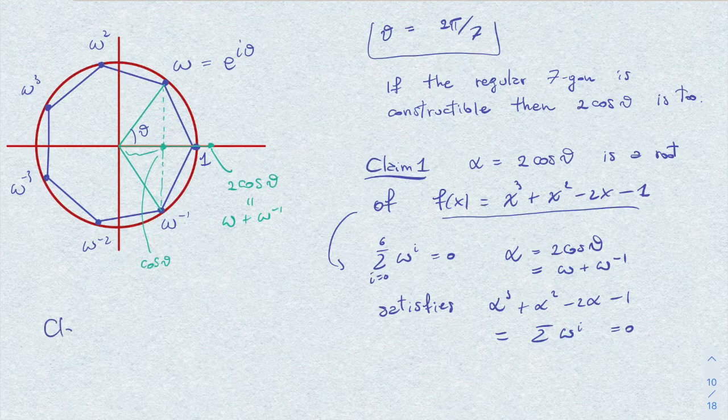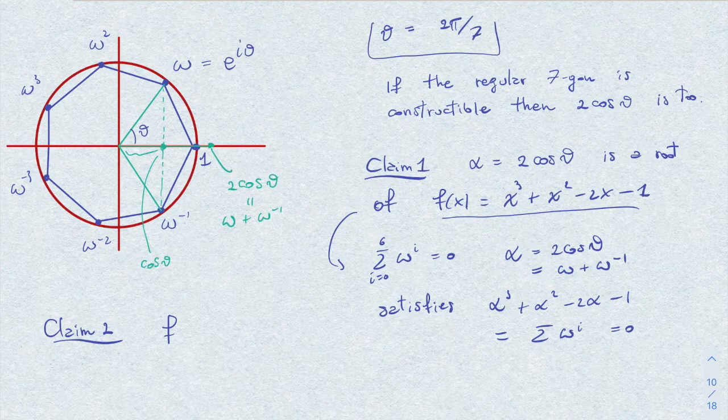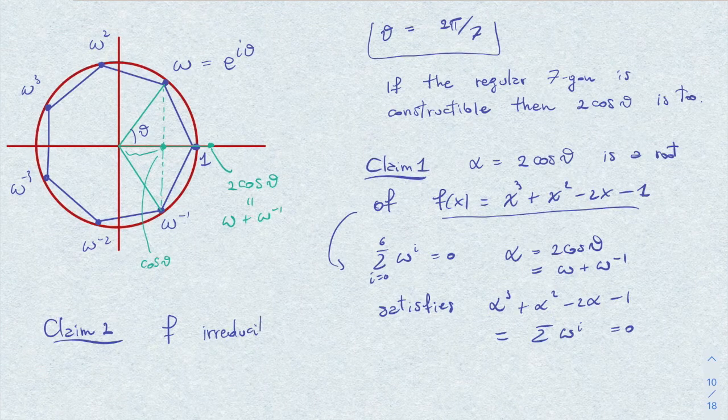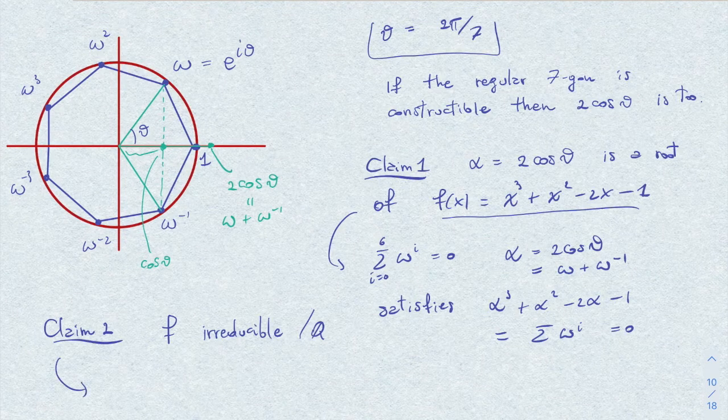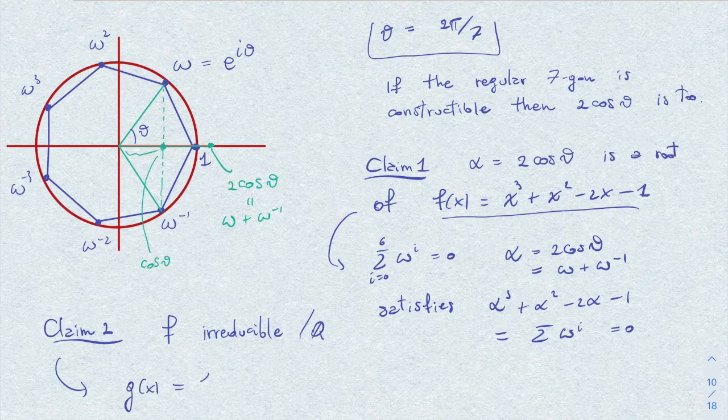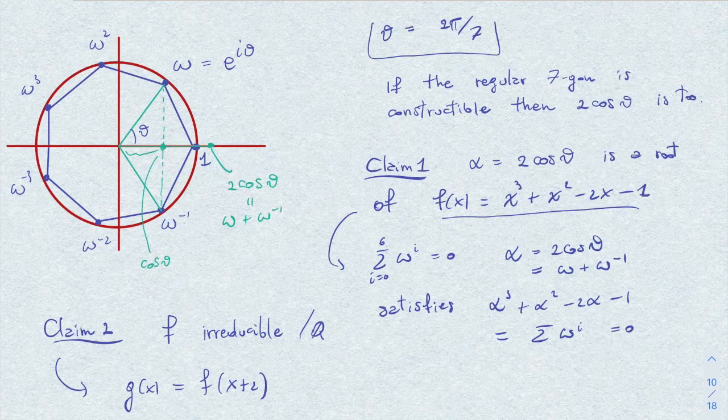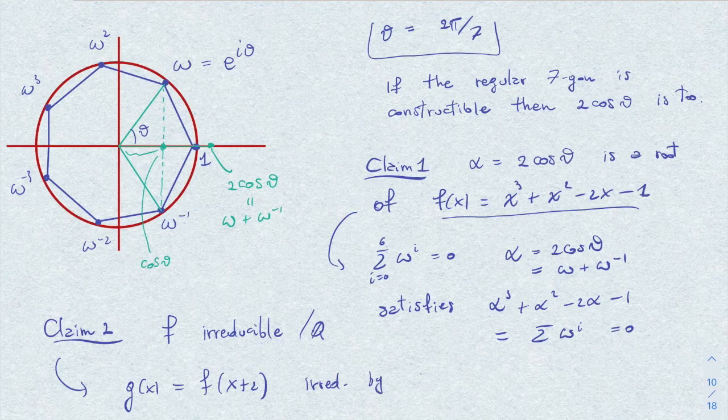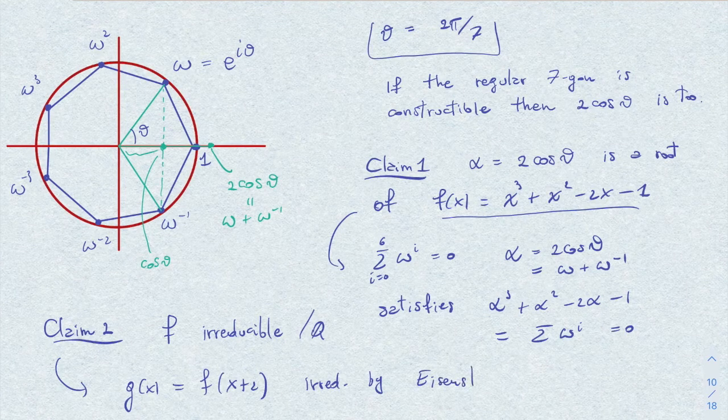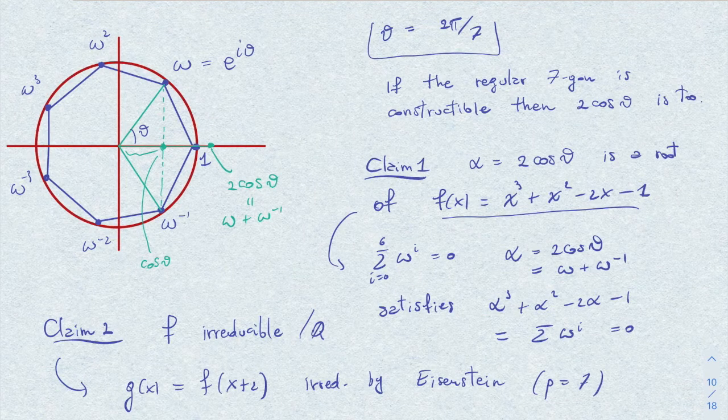Then we can observe, as a second step, that f is irreducible over the rationals. This follows by, for example, showing that the polynomial g(x), which is the shift of x by two, satisfies Eisenstein's criterion. So this is irreducible by Eisenstein with p equals 7, which is what we get if you substitute this.